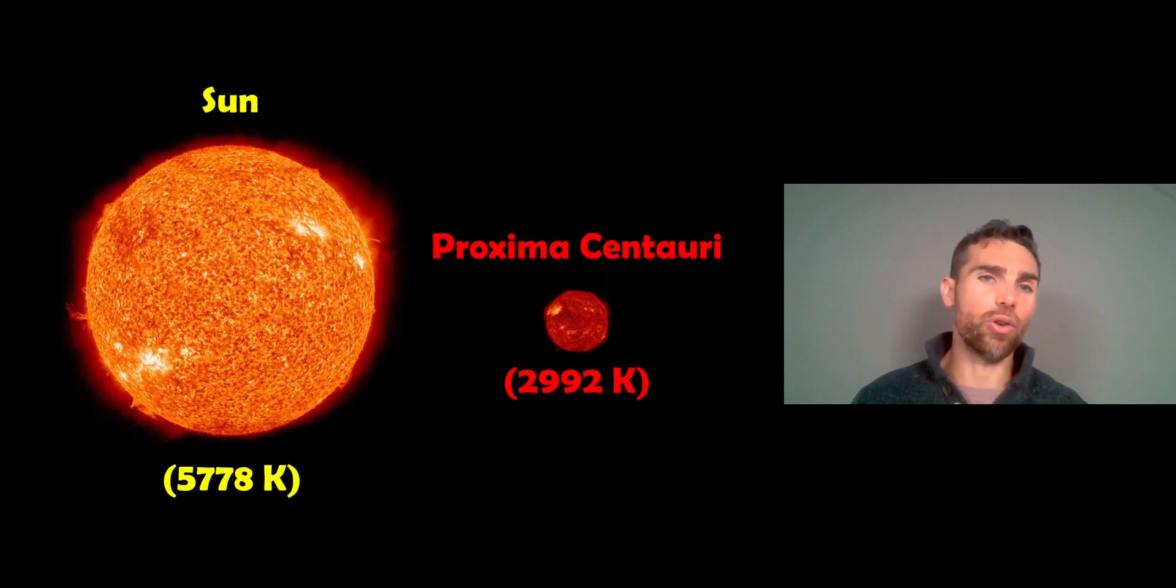Now the star that it orbits, Proxima Centauri, is quite a small red dwarf, so in comparison to the Sun it's quite small, it's called a red dwarf because obviously it is red as well, and the reason why it's red is it has quite a low surface temperature, so in comparison to the Sun it's almost half the temperature.